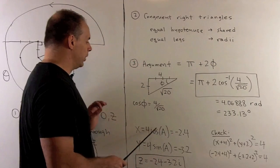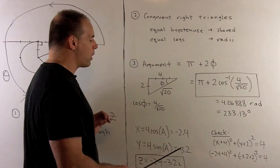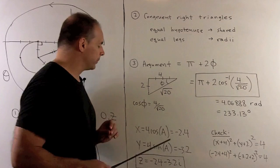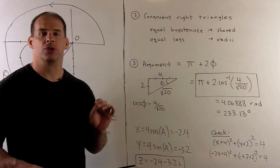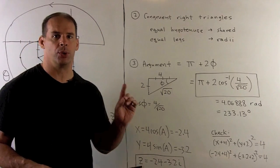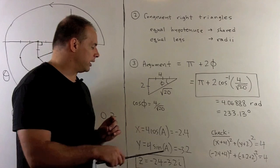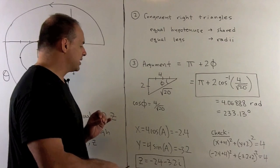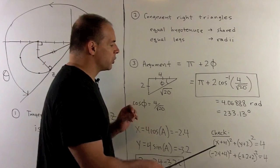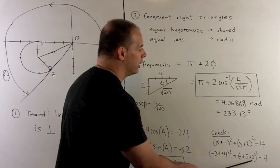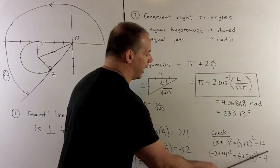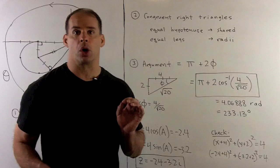If we put our angle in, we note we get minus 2.4 minus 3.2i. So, our z is going to be minus 2.4 minus 3.2i. If we want to check our work, we can see that this lives on the circle. So, we put it into our equation for the circle, and then we note that our equation holds, and that checks our work.